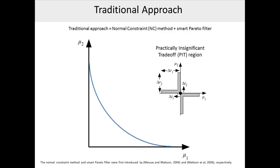The traditional approach for obtaining Smart Pareto sets begins by generating a well-distributed set of Pareto solutions with a high density, using the normal constraint method. Then a Smart Pareto filter is applied, which removes all solutions that do not provide sufficiently unique information. This filtering is done by defining a region of practically insignificant trade-off, also known as the PIT region, which is placed around each point in the set, removing all remaining points that lie within it. The inherent weakness of this approach is that significant computational effort is wasted generating Pareto points that the user will never see.